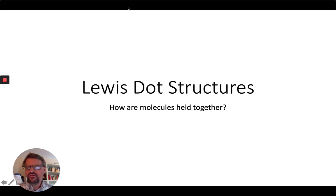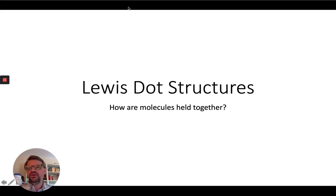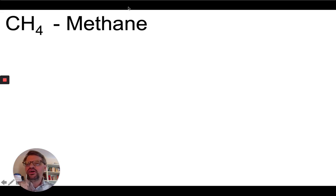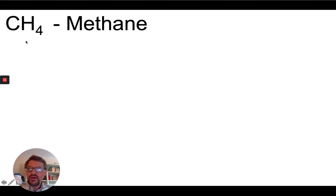Hi all. This video is about Lewis dot structures — a way of showing how molecules are held together. In particular, the five problems from the previous lesson are going to be reviewed here. Remember, when you do a Lewis dot structure, you want to look at your formula. In the first one, we have methane, CH₄, and we count up how many atoms of each element and how many valence electrons each one has.